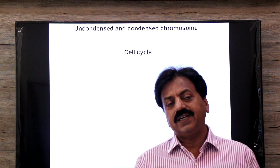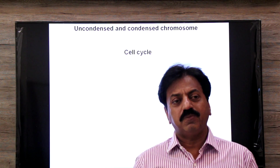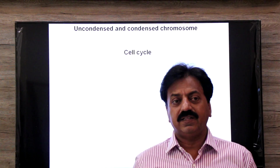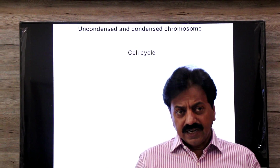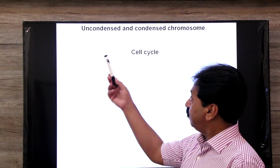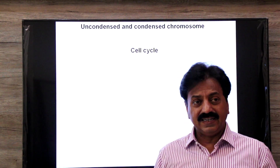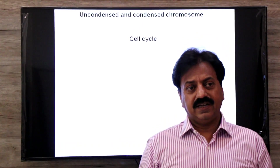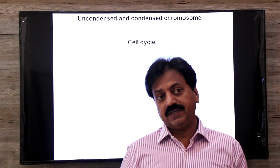Looking at cell cycles: during interphase, we will look at chromosomes in their uncondensed form, which we call the chromatin network.